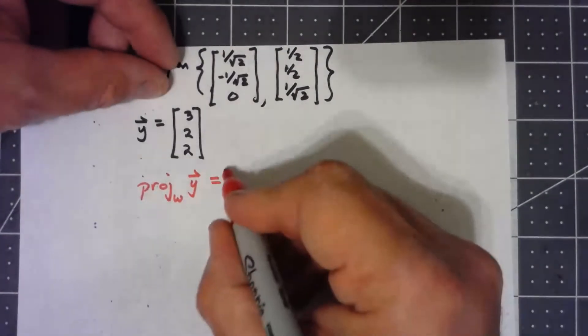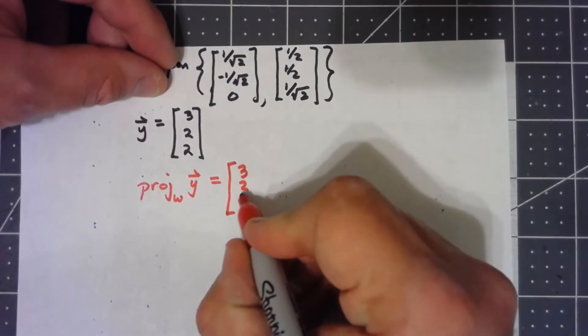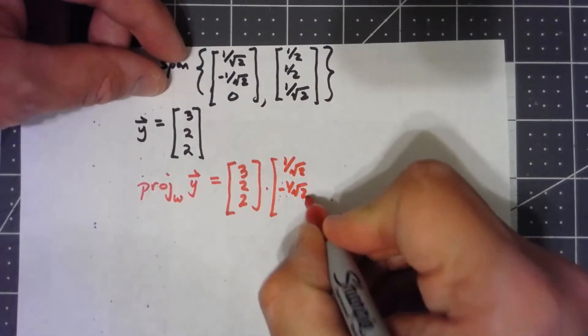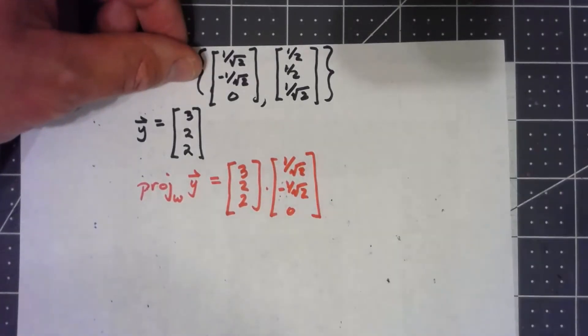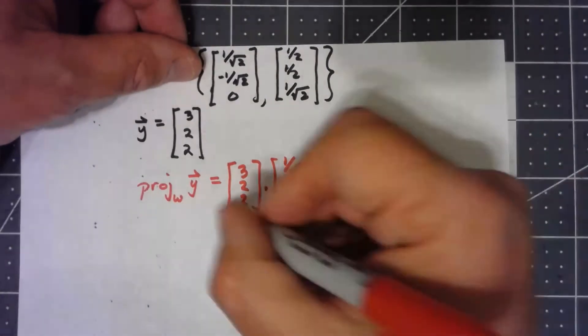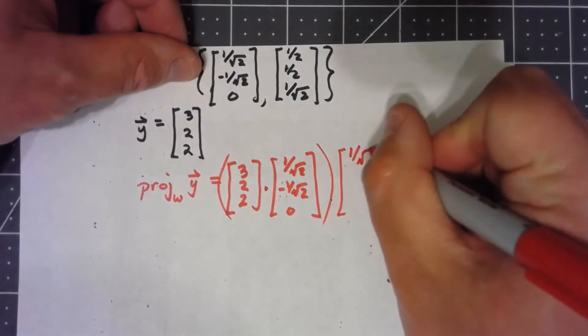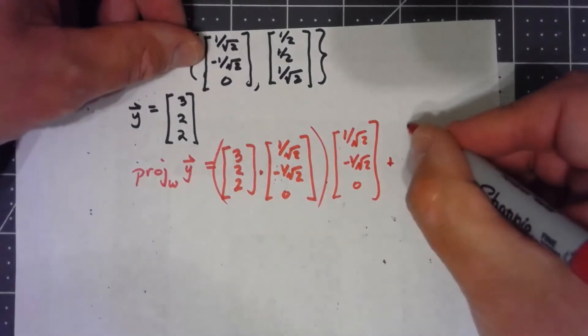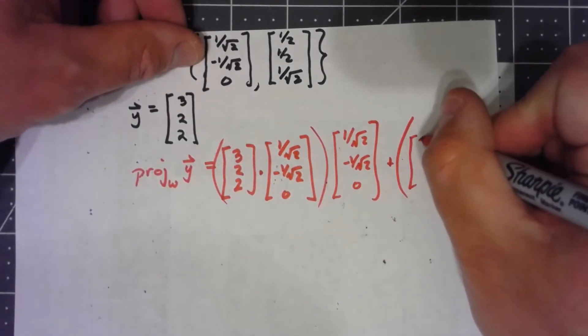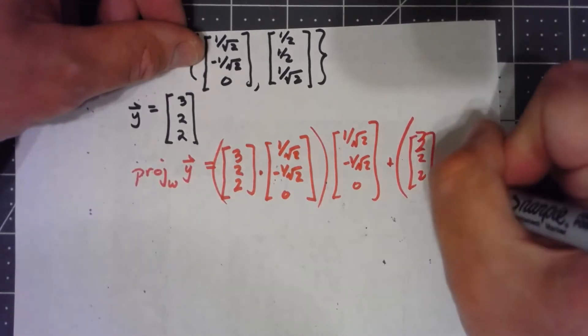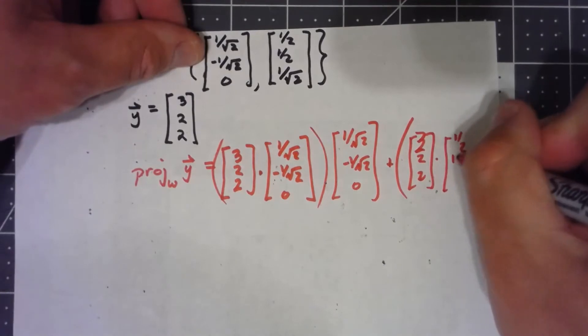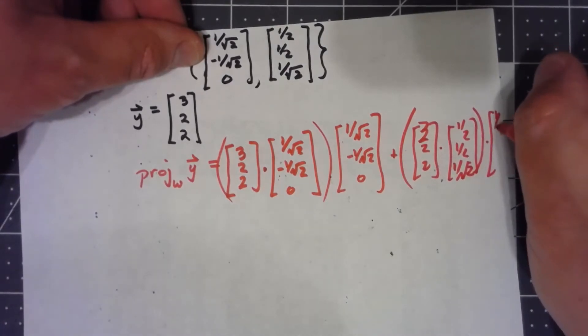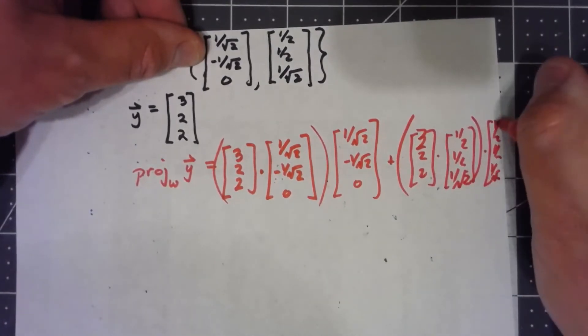So let's say I want to project this vector Y onto that subspace. All I need to do is dot my vector with my basis vectors and take that times my basis vector. That dot product times [1/√2, -1/√2, 0], plus do the same thing with the other. I'm going to take [3, 2, 2] dotted with [1/2, 1/2, 1/√2], and that's going to be my coefficient of [1/2, 1/2, 1/√2].